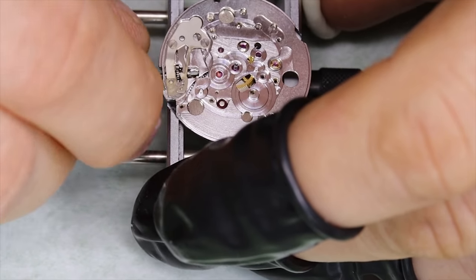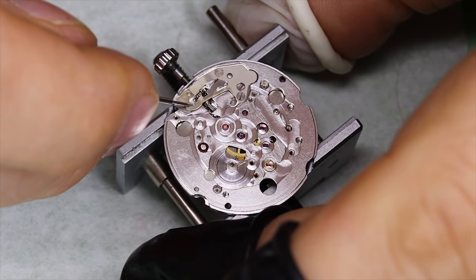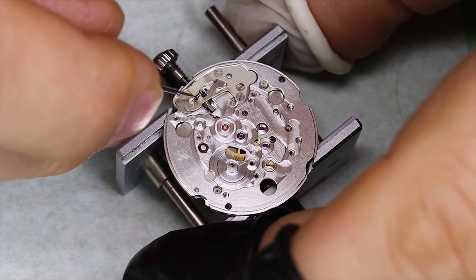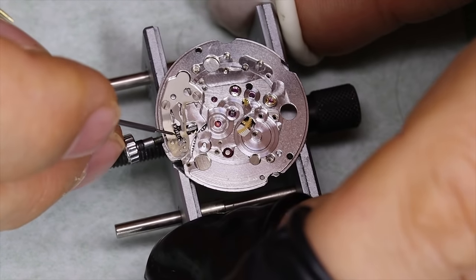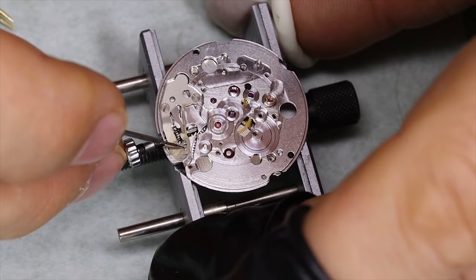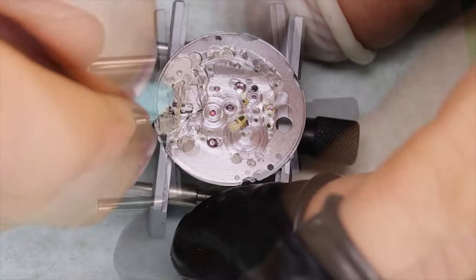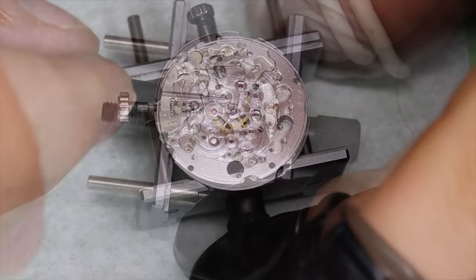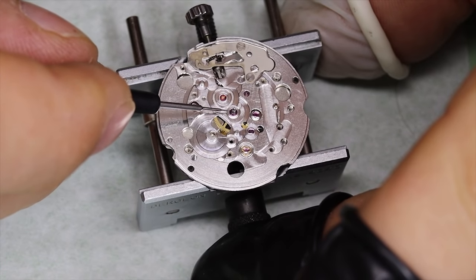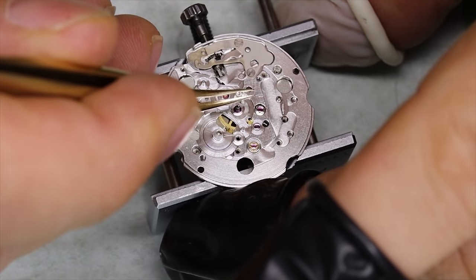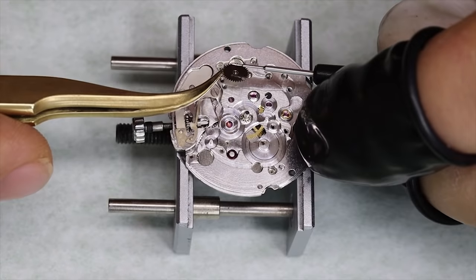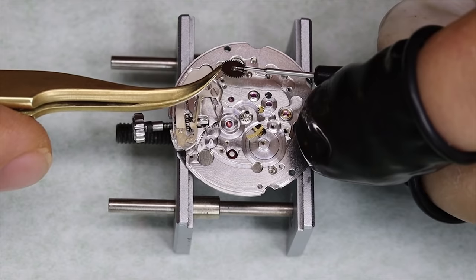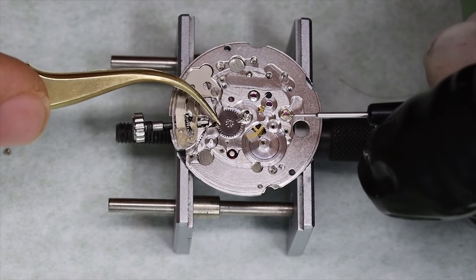Alright, testing that it works. Using some 9504, both on the keyless works and for the cannon pinion. You can also use D5 or 8200, that kind of thing. And with all that in place we can put in the quick set lever, which has its own little piece to keep things in place.